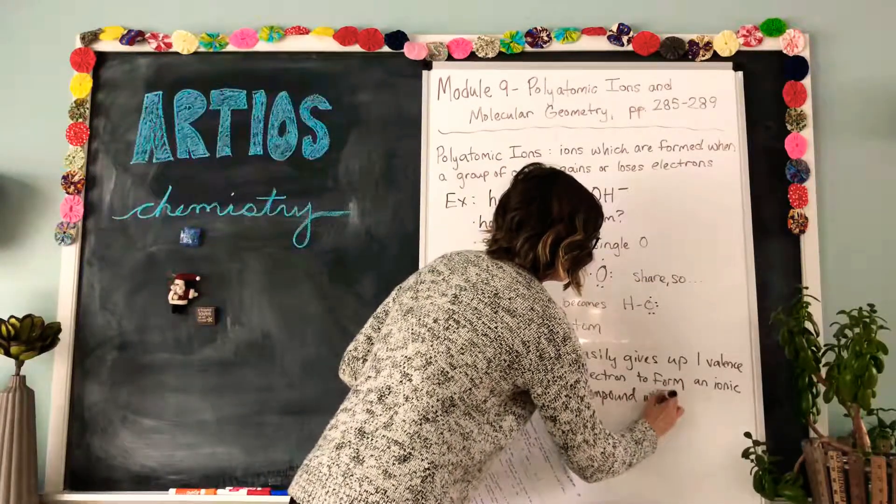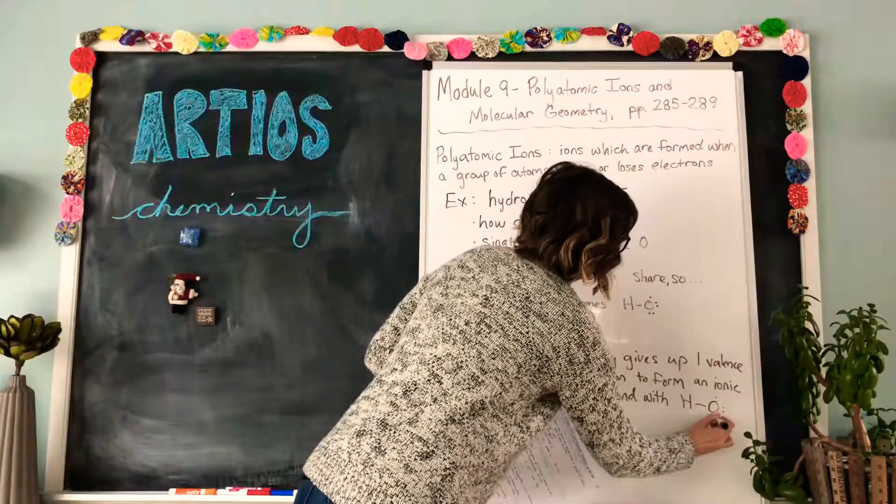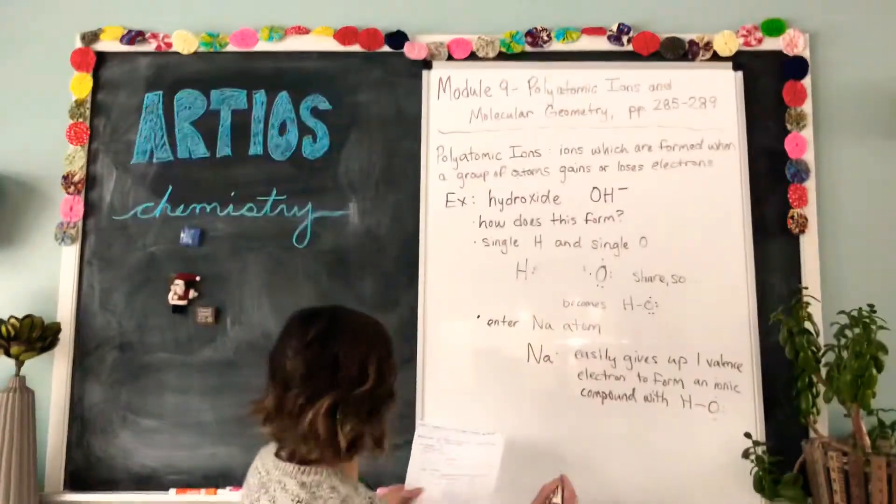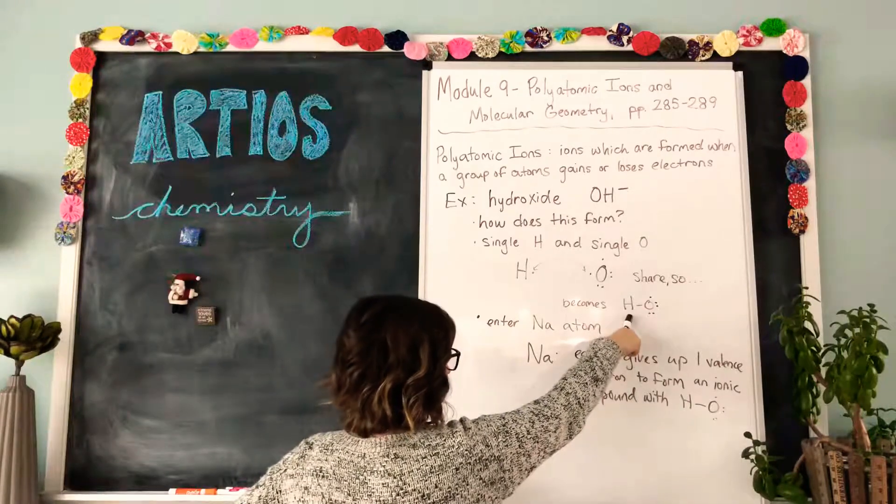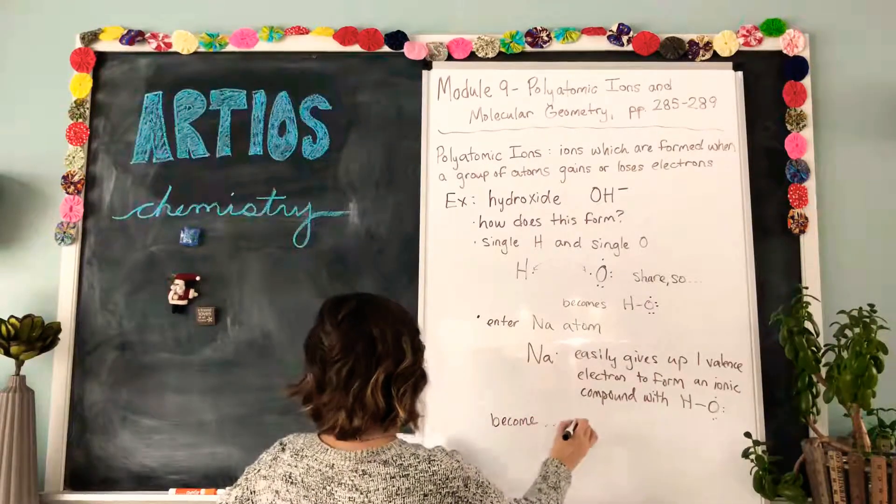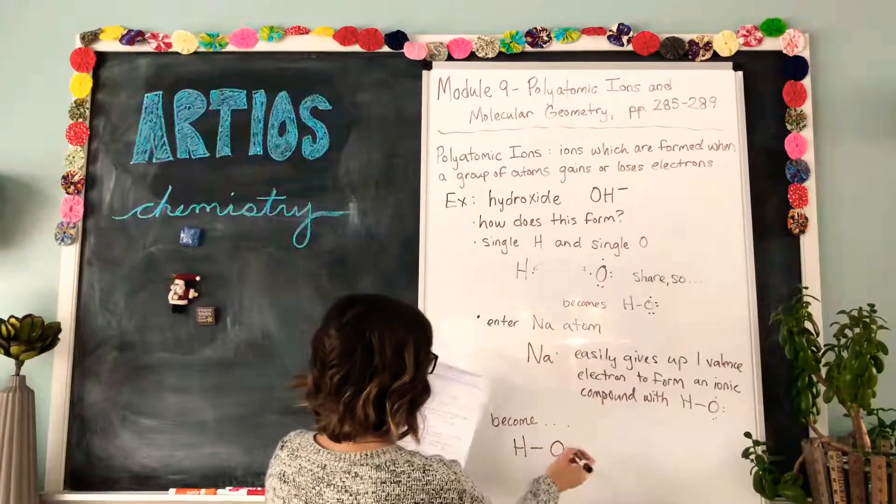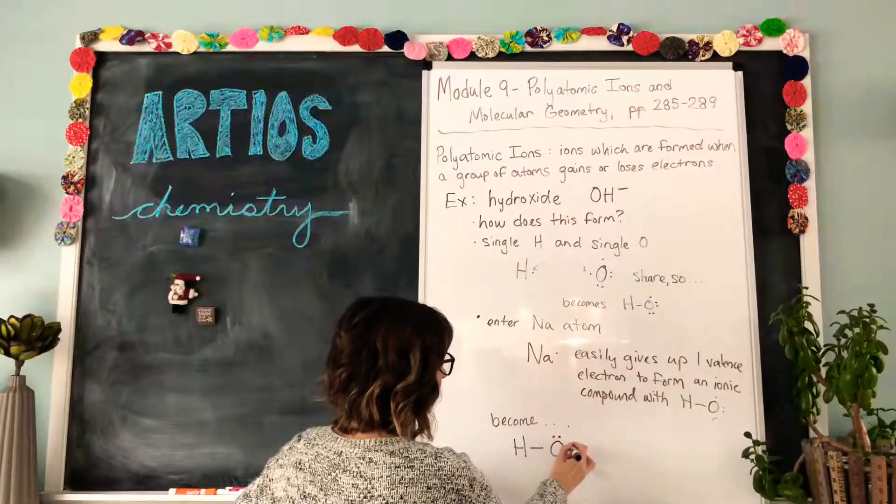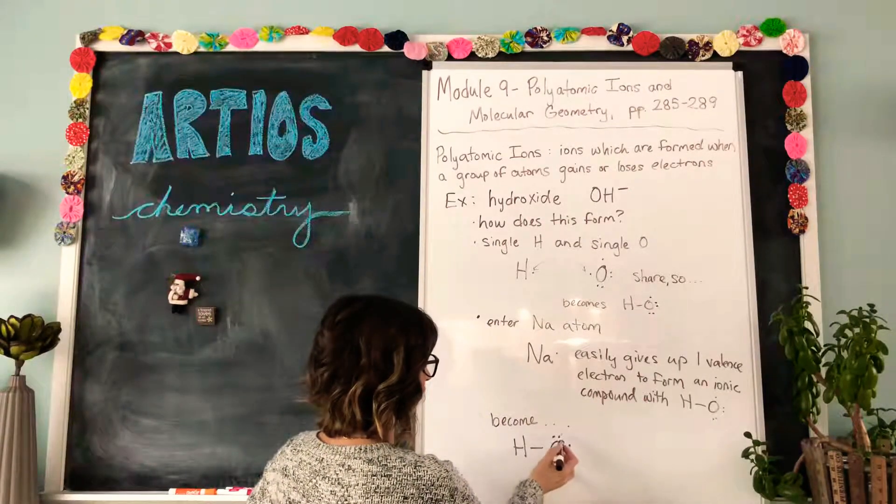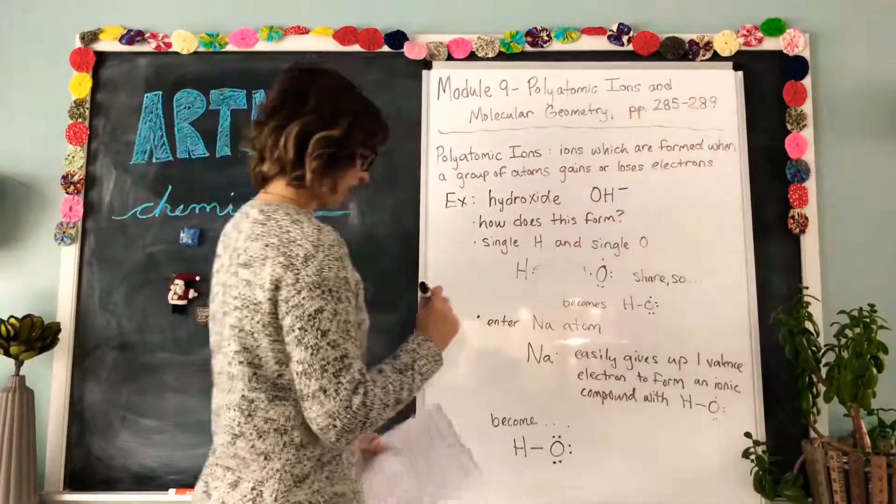With the OH that is hanging out. So this HO and this sodium become H bonded to O. The oxygen has taken the valence electron from sodium, so it now has one, two, three, four, five, six, and it's sharing seven and eight electrons, so it has a negative charge.